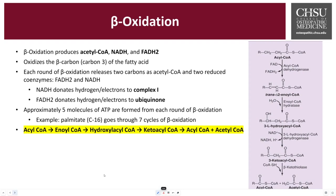Each round of beta-oxidation results in the creation of acetyl-CoA, which you should know from glycolysis, as well as two reduced forms of coenzymes: FADH2, flavin adenine dinucleotide, and NADH, nicotinamide adenine dinucleotide, which are high-energy electron carriers. The acetyl-CoA can then enter the citric acid cycle or Krebs cycle, further generating more NADH and FADH2, which are crucial for powering the electron transport chain to make the bulk of ATP.